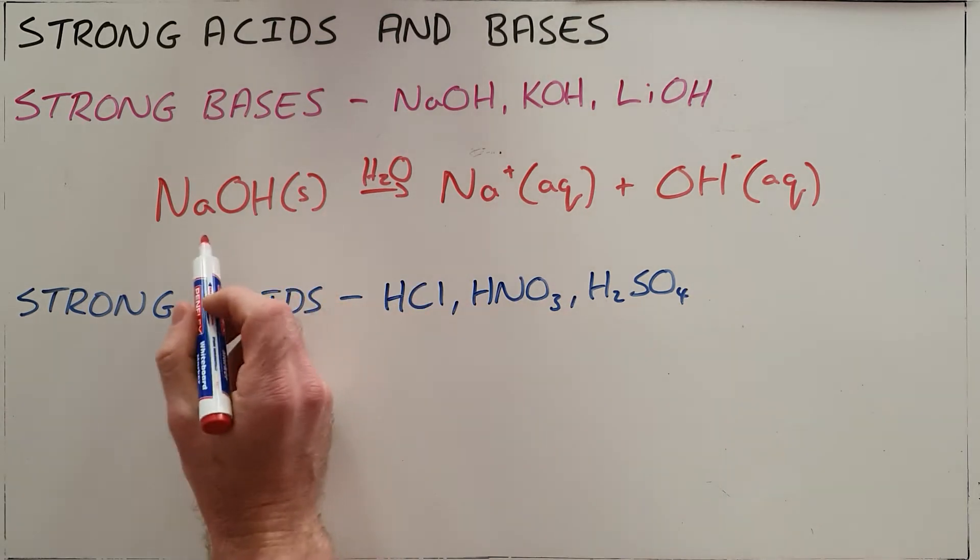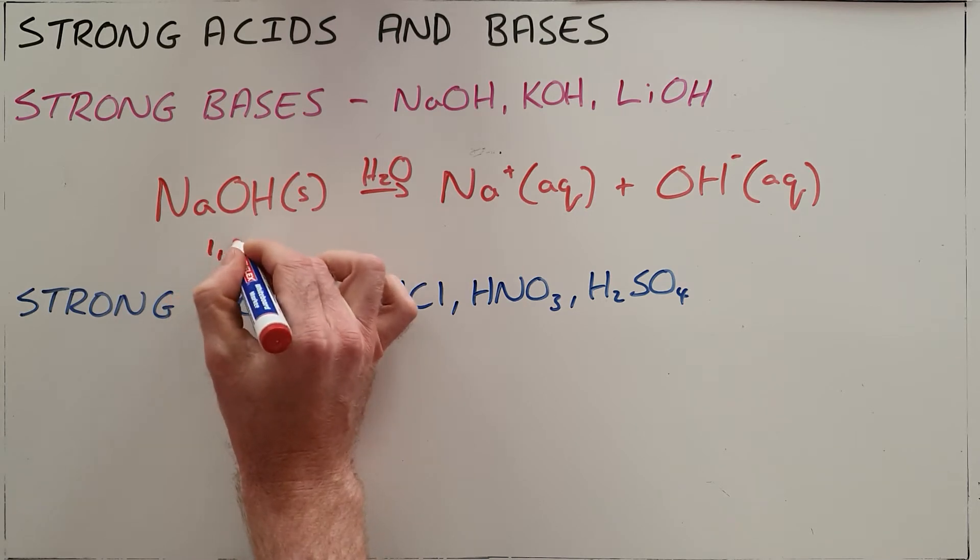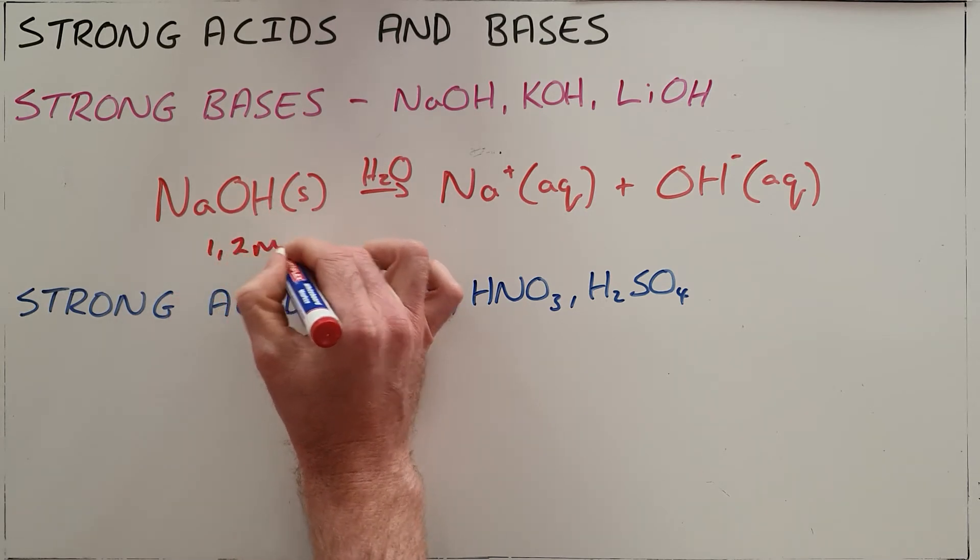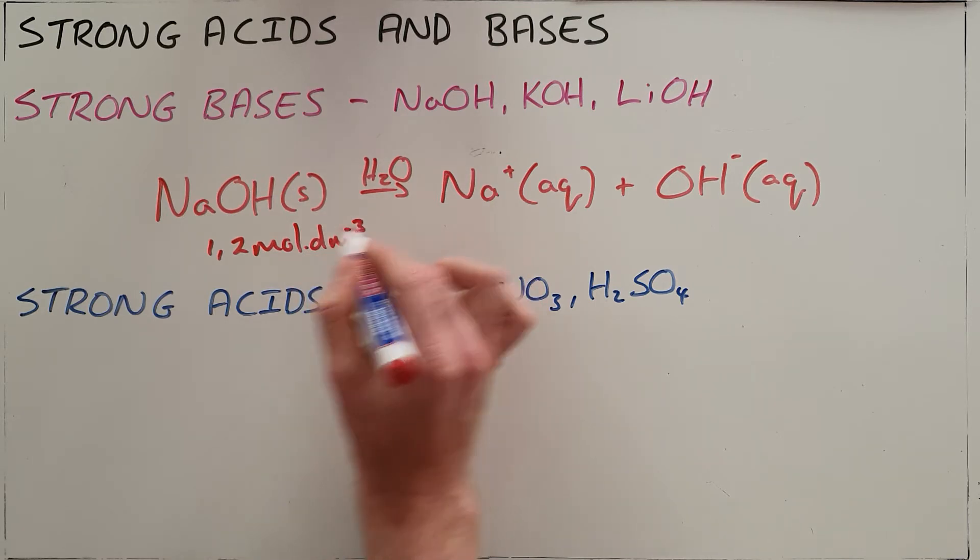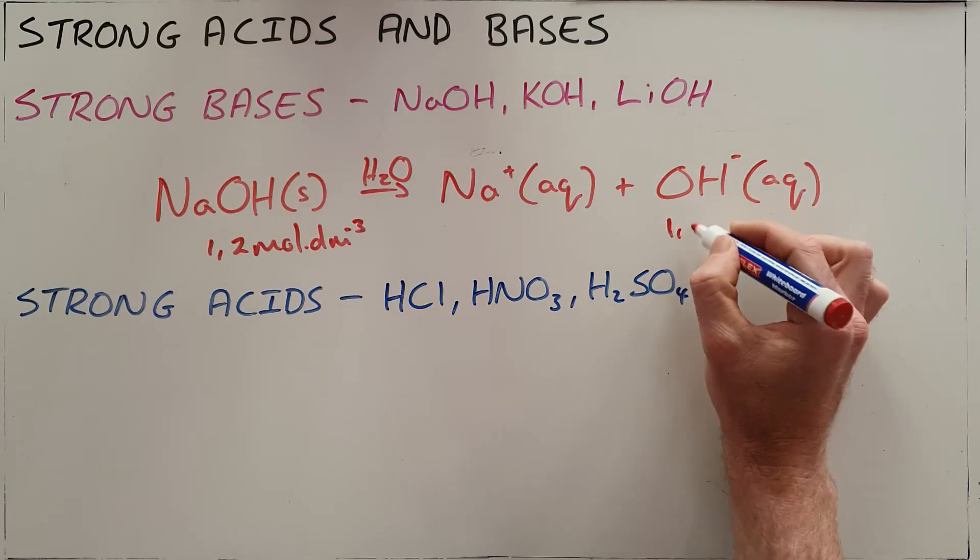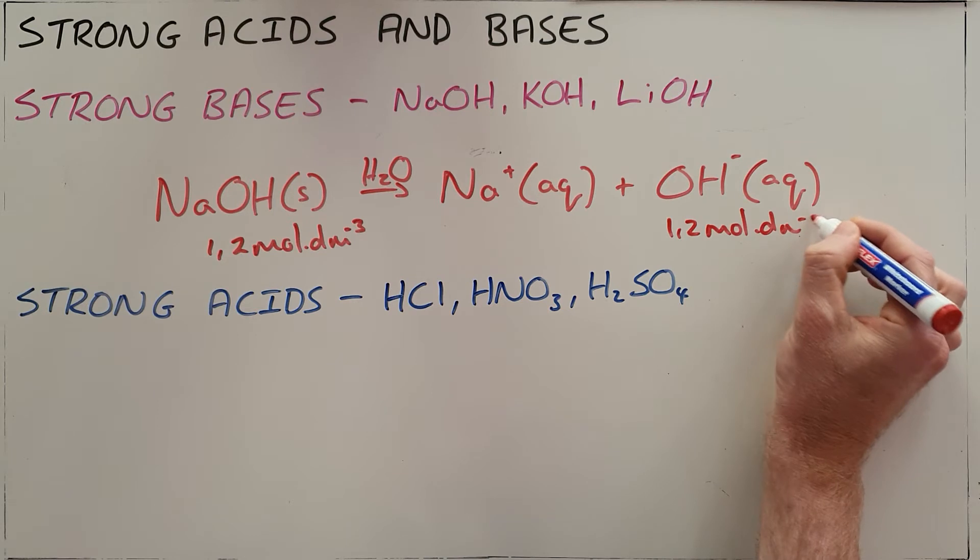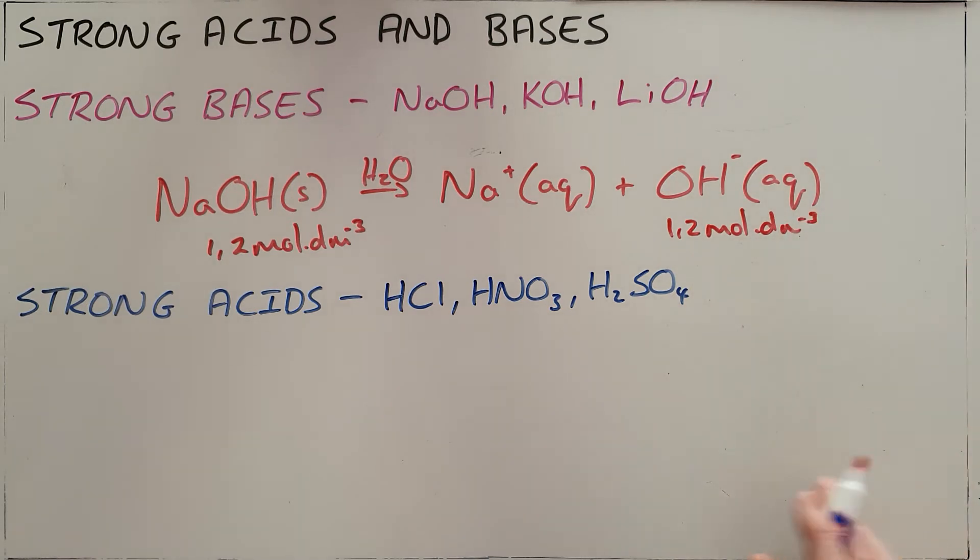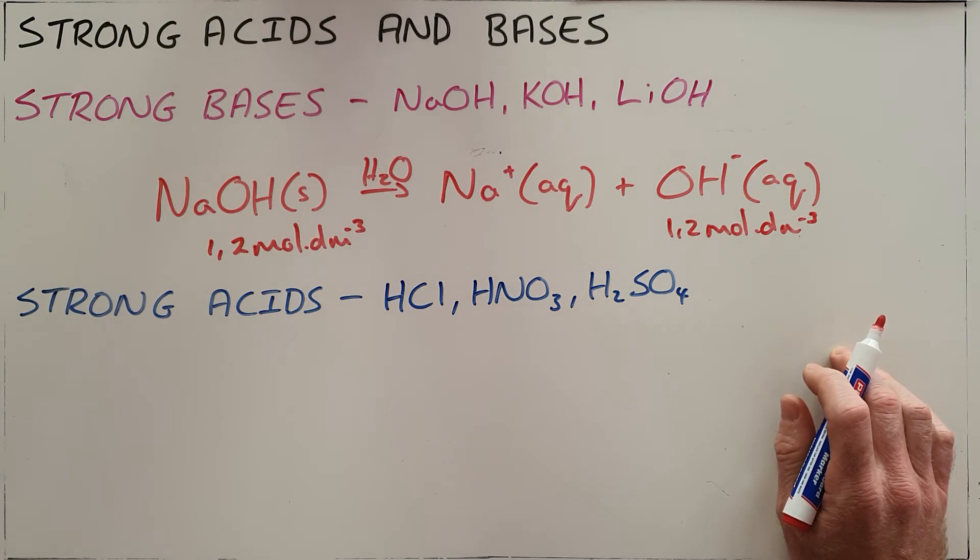basically saying that if we start with a 1.2 molar solution, meaning moles per cubic decimetre solution of sodium hydroxide, all of that will dissociate which would mean that we would end up with a 1.2 mole per cubic decimetre solution of hydroxide. So we say a strong base is one that dissociates completely in water.